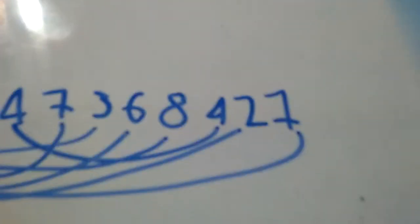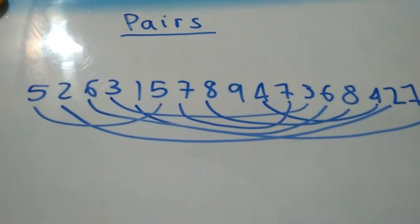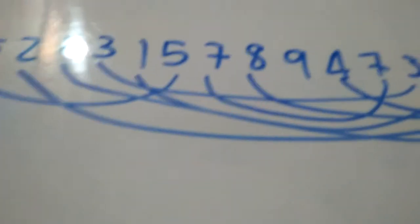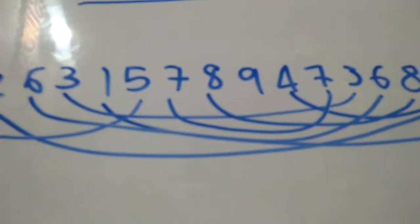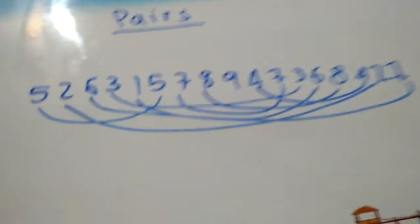If we add this nine over here, then each digit from one to nine will occur twice. 52631578947368421. This number nine doesn't have a pair in this cyclic number.